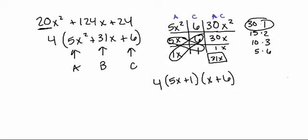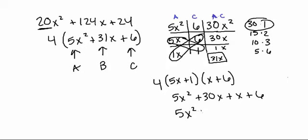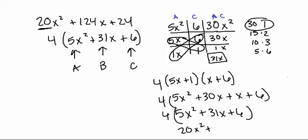I'll go ahead and FOIL this out just so you believe it's correct. Foiling: 5x times x gives us 5x squared; outside terms 5x times 6 is 30x; inside terms 1 times x is x; last terms 1 times 6 is 6. Simplifying, we get 5x squared plus 31x plus 6, then multiplied by 4 gives us 20x squared plus 124x plus 24. That confirms our answer is correct.